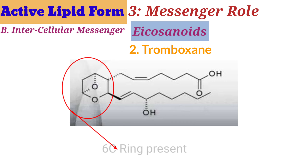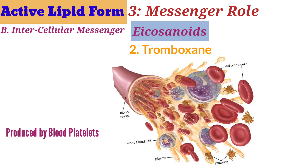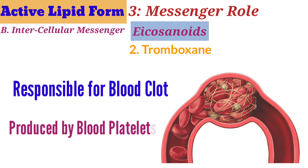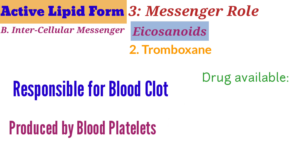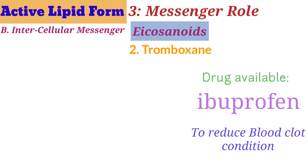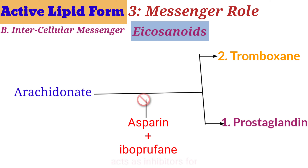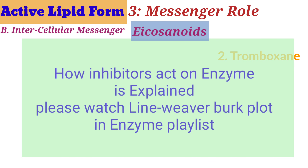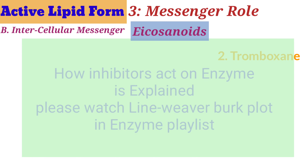The second group of eicosanoids are thromboxanes, which contain a 6-carbon ring member. They are produced by blood platelets and are mainly responsible for blood clot formation, thereby reducing blood flow. The drug ibuprofen is available to reduce blood clotting. Both aspirin and ibuprofen work by acting as inhibitors of an enzyme known as cyclooxygenase, which is responsible for production of prostaglandins and thromboxanes.